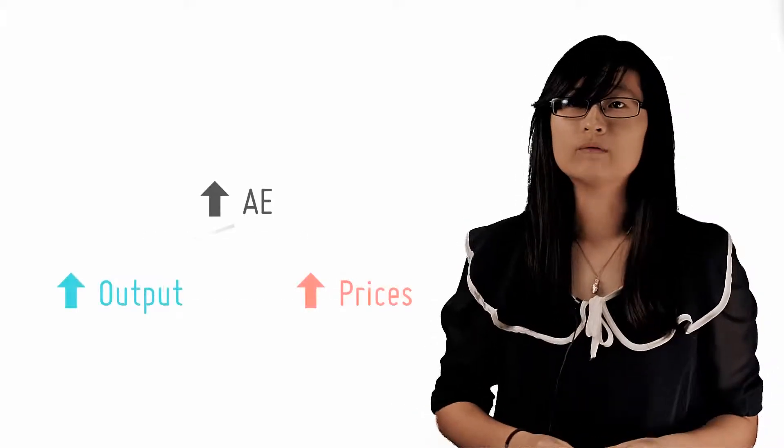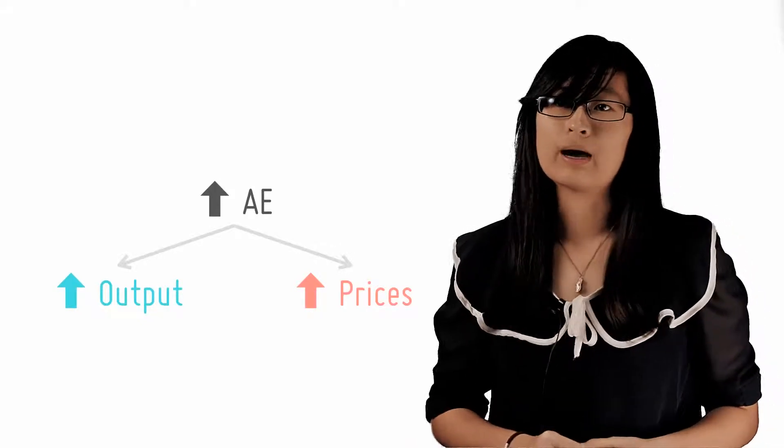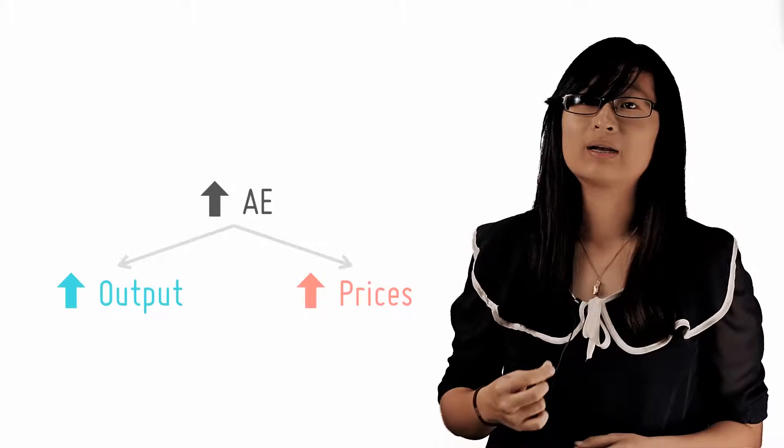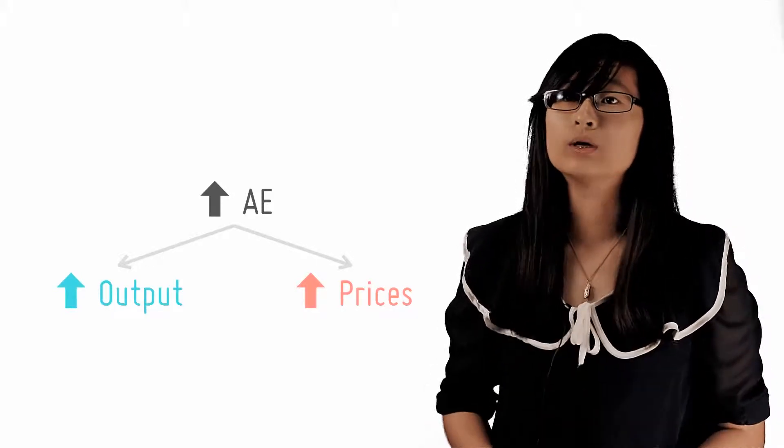In the real world, however, things aren't so peachy. One big limitation of the multiplier is that part of the increase in aggregate expenditure or national income may manifest itself in higher prices instead of higher output.